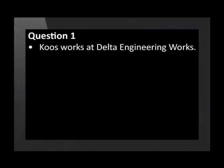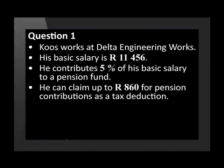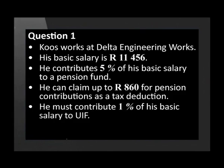Goethe has just started working at Delta Engineering Works as an assistant engineer. His basic salary is 11,456 Rand per month. He contributes 5% of his basic salary to a pension fund. He can claim up to 860 Rand for pension contributions as a tax deduction.